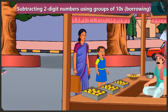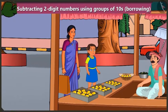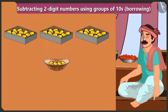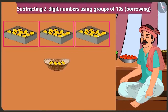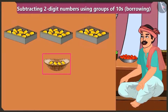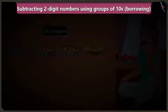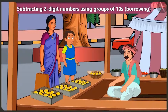Mummy, look, we can get mangoes from there. Brother, how many mangoes are there in one box? There are ten mangoes in one box. I have three tens and four ones, means thirty-four mangoes. How many mangoes do you want? I want eight mangoes.